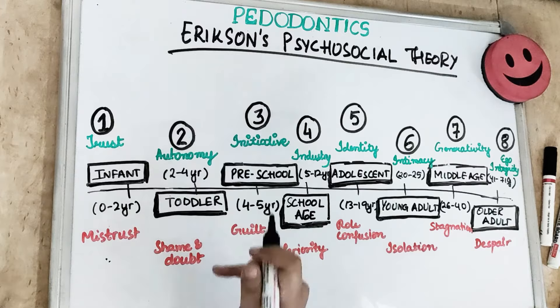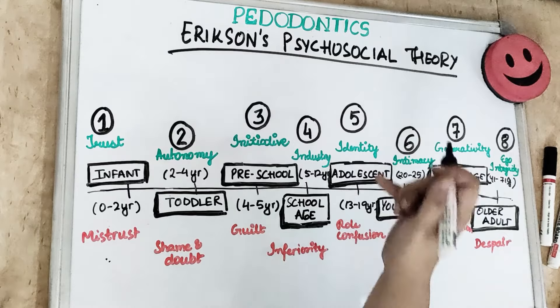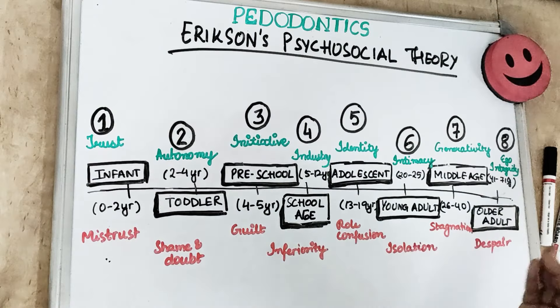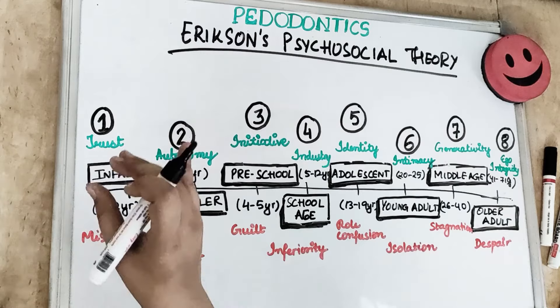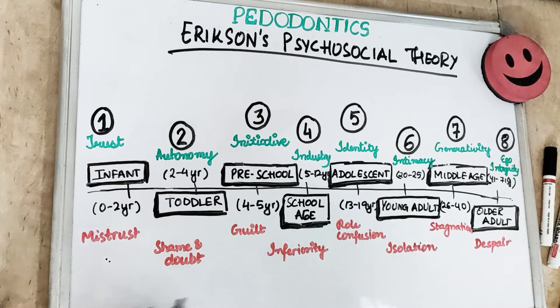Based on that, Erikson described eight stages of life: trust versus mistrust; autonomy versus shame and doubt; initiative versus guilt; industry versus inferiority; identity versus role confusion; intimacy versus isolation; generativity versus stagnation; and ego integrity versus despair. These stages happen at every stage of life, starting from infancy through older adulthood. In infancy we have trust versus mistrust, and in the toddler stage we have autonomy versus shame and doubt.